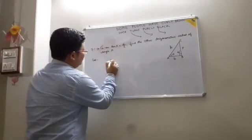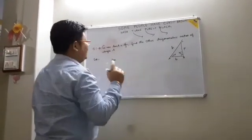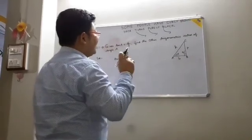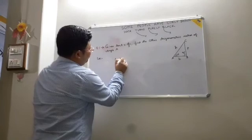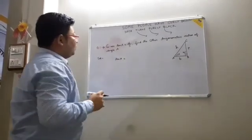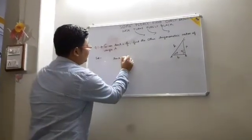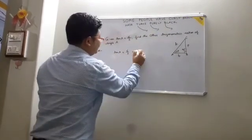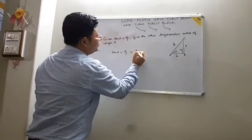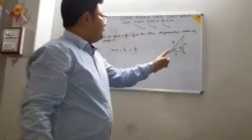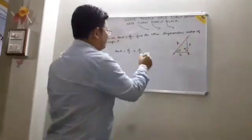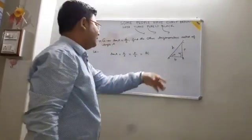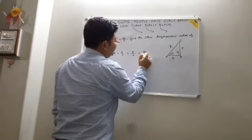So tan A equals the given value of 4 by 3. We know tan equals perpendicular by base — P by B — where P is BC and B is AB of the right angle triangle.